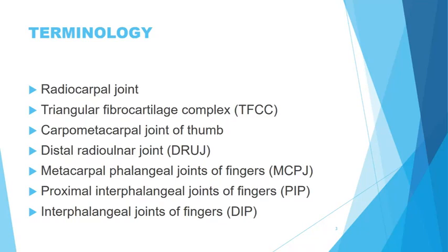Terminology-wise, where's your radiocarpal joint? If you think about your radius, move your hand down along the radius to the hand, and where it hits the carpal bone, that is the radiocarpal joint. You know the radius is part of that articulation, as well as the scaphoid and lunate bones. That's where most of your wrist flexion and extension happens.